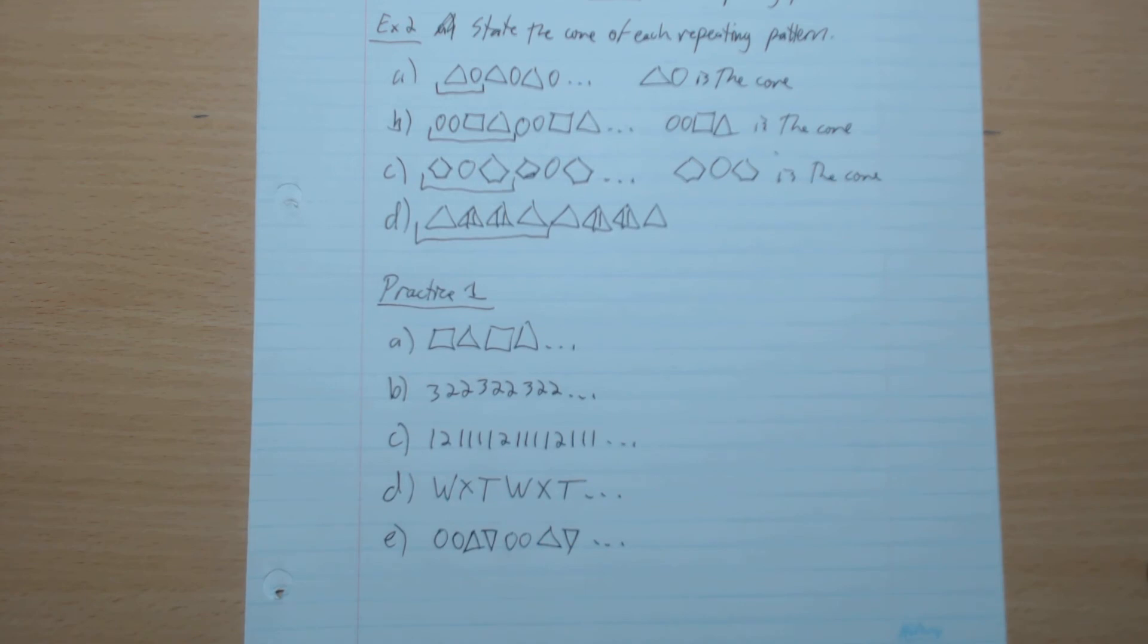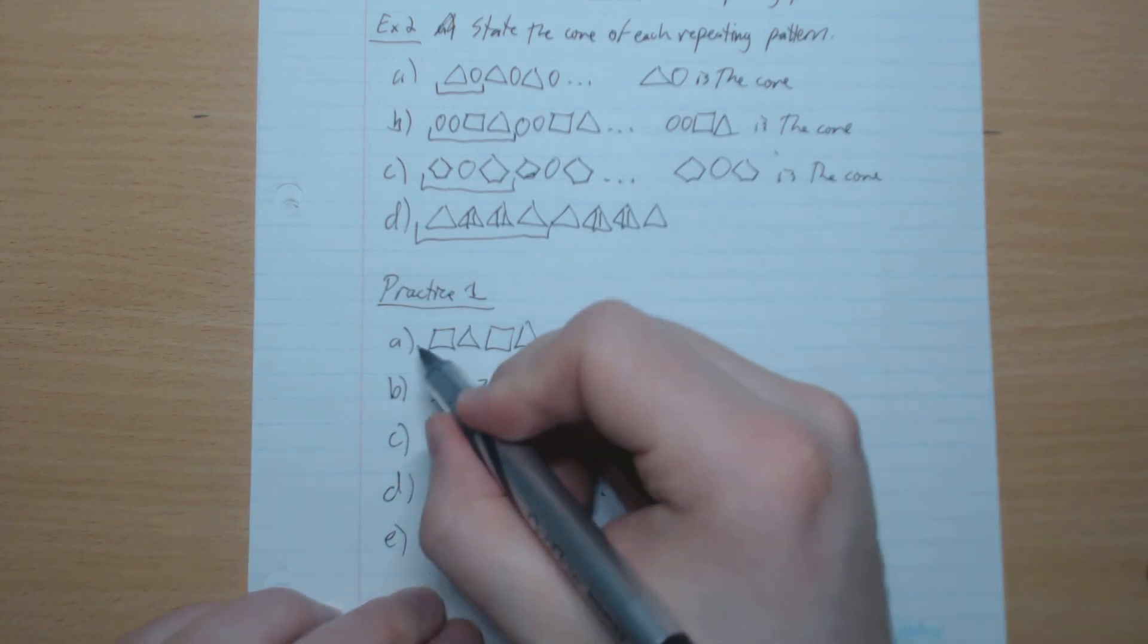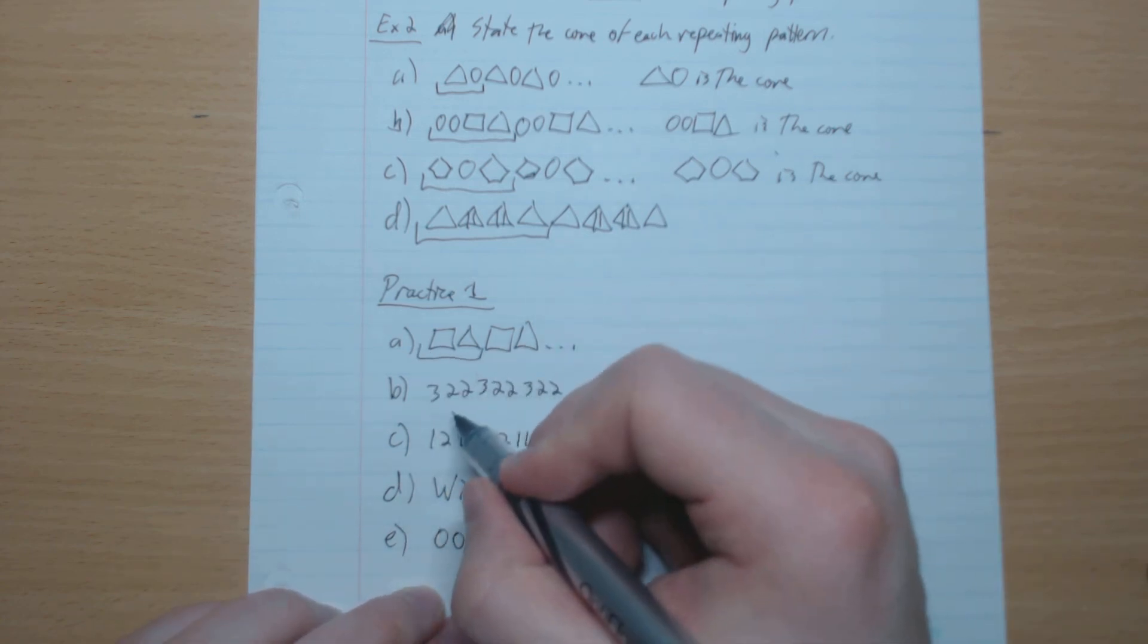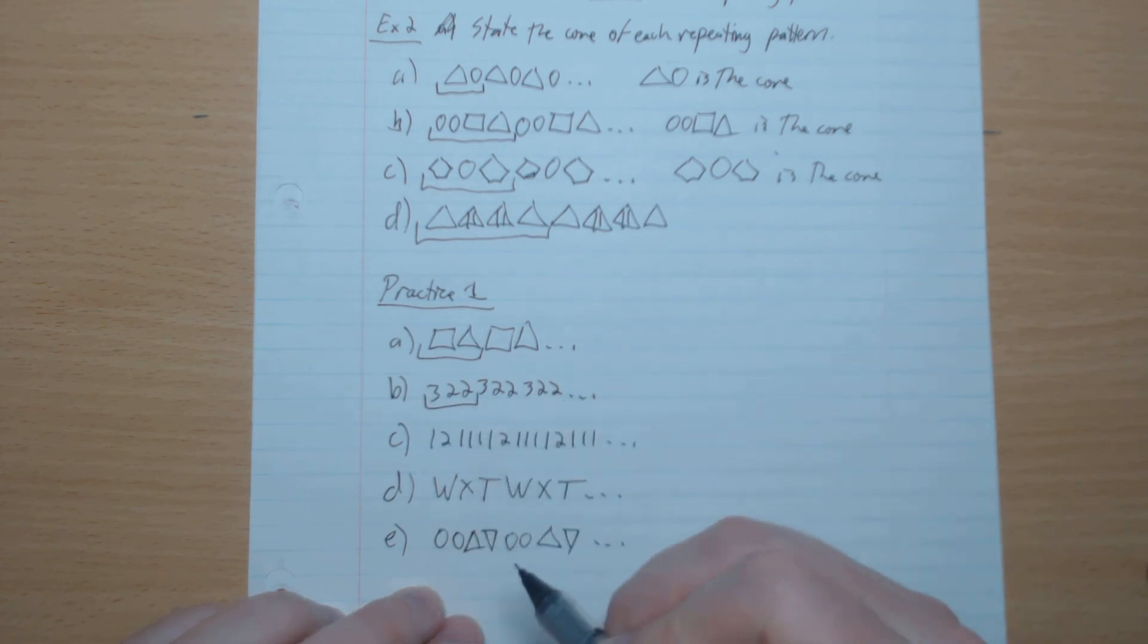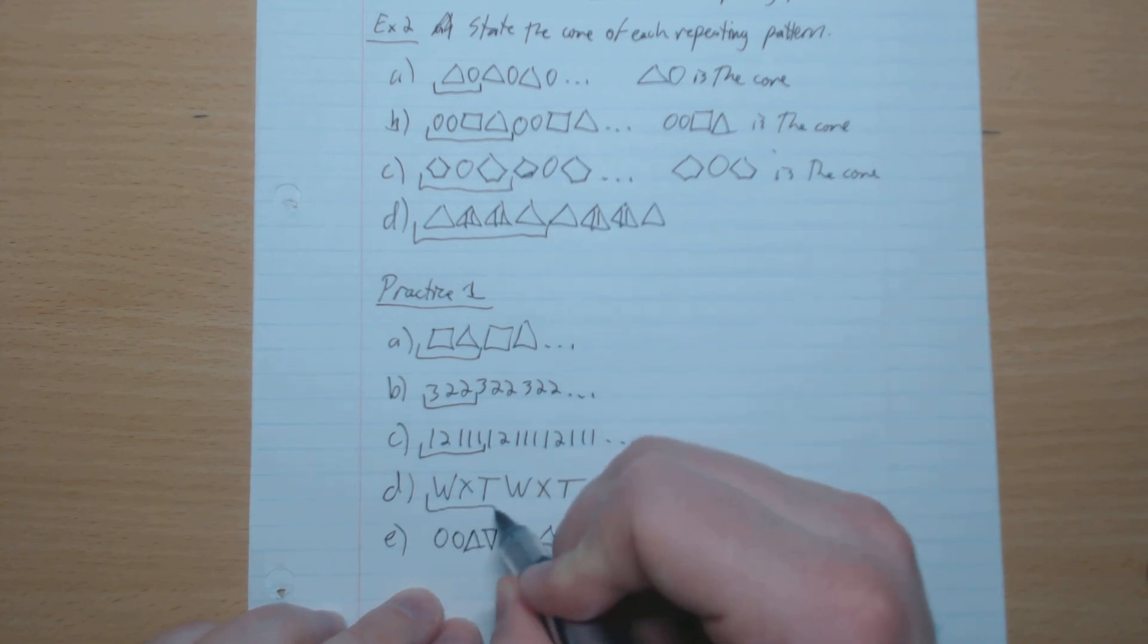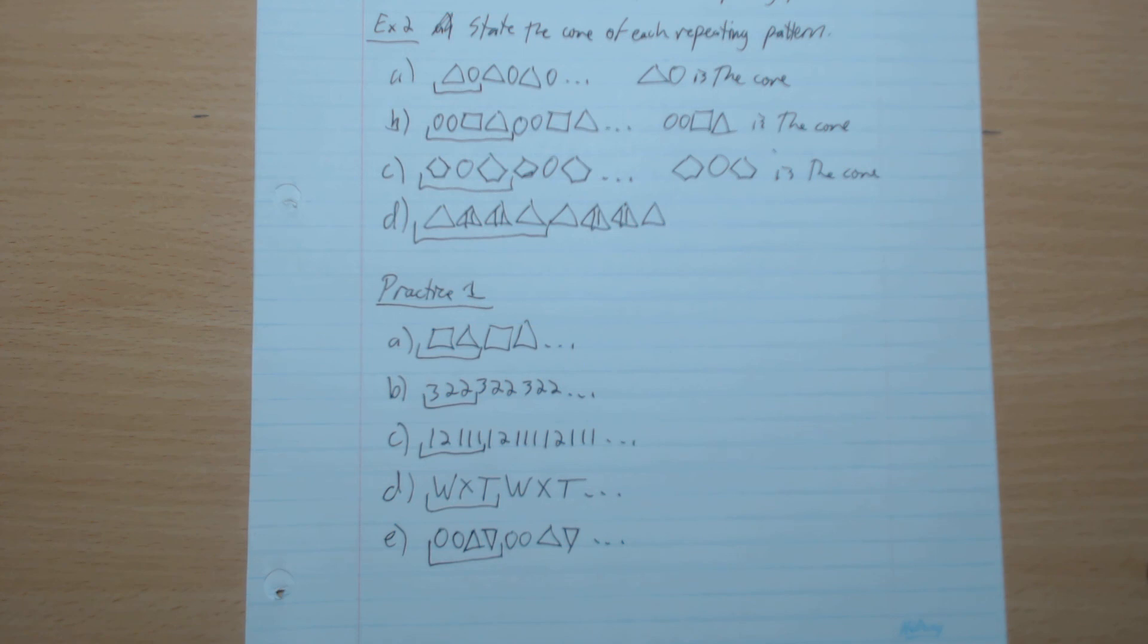Go ahead and find the core for each repeating pattern. Okay, so we see that it's this here - three two two like that, one two with three ones, W-X-T, and this like that. Perfect, very easy and short lesson. See you next video.